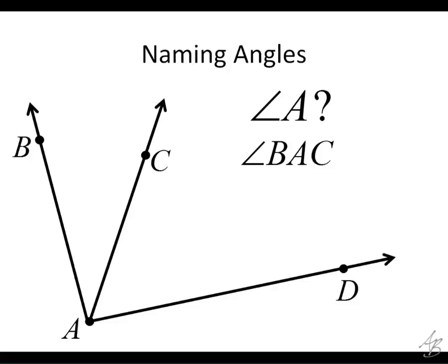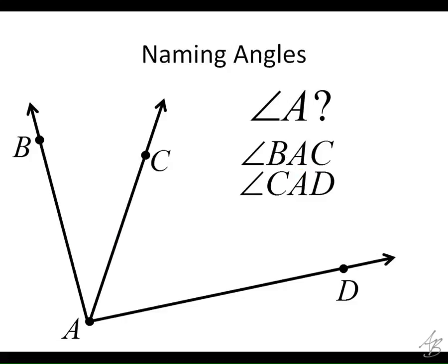Do you know what angle I'm referring to when I say angle B-A-C? There are two acute ones there. Angle B-A-C refers to this one. Notice that the middle letter — A — is the vertex. On one side we go in one direction with B, and on the other side we go to C. One way to think about it: we start at B, go to A, and then go to C, and that's the angle formed. If I use C-A-D — angle C-A-D — that would be this one.